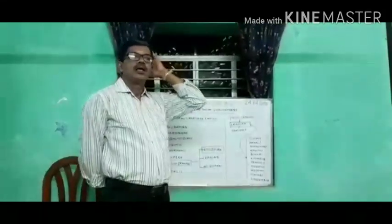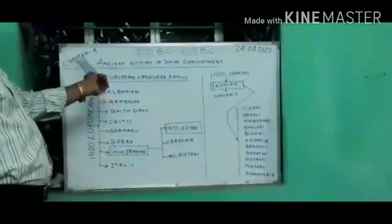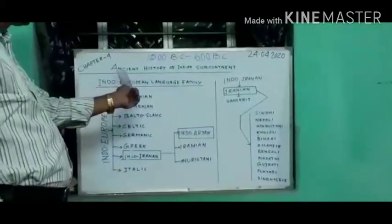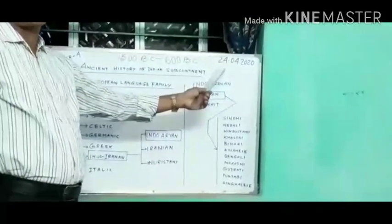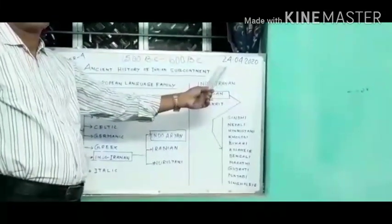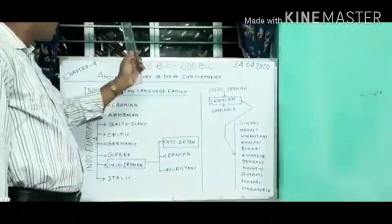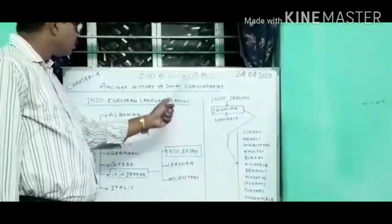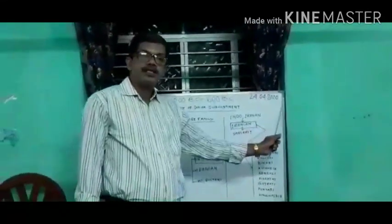I will request all of you to follow the board. This is Chapter 4 and in this chapter, the ancient history of the Indian subcontinent will be discussed. In this chapter, the Indian history will be discussed divided into two parts. One is the Indo-European language family and another is the Vedic Civilization.